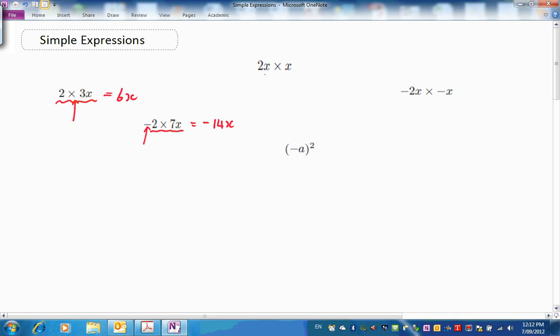I want to do a harder one. Come up the top here. 2x times x. Now, numbers together and the letters together we found before. So it's 2 lots of x times itself. Oh, that's right. That was a square. Any number, and x is just a number, remember. Times itself is a square.